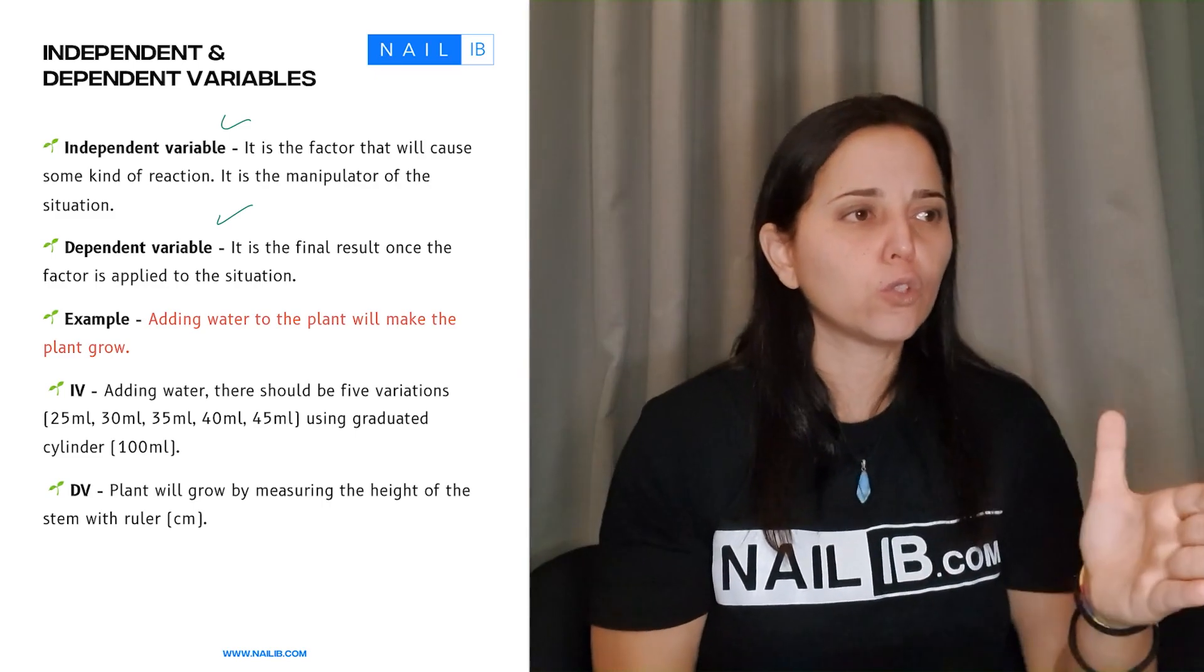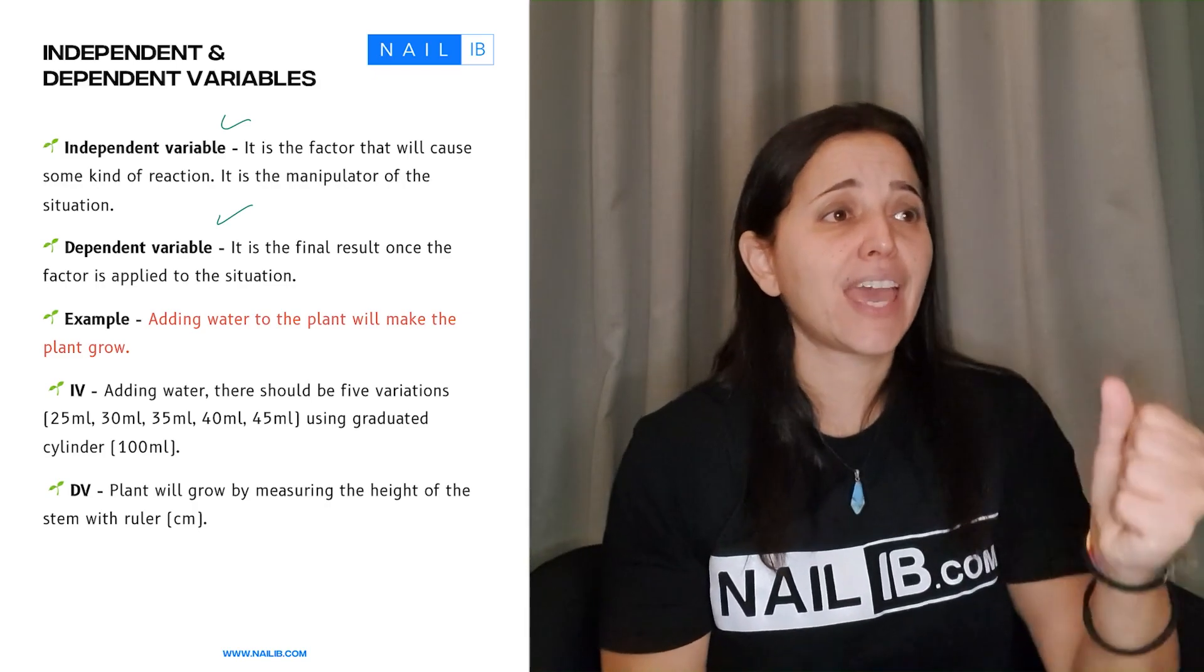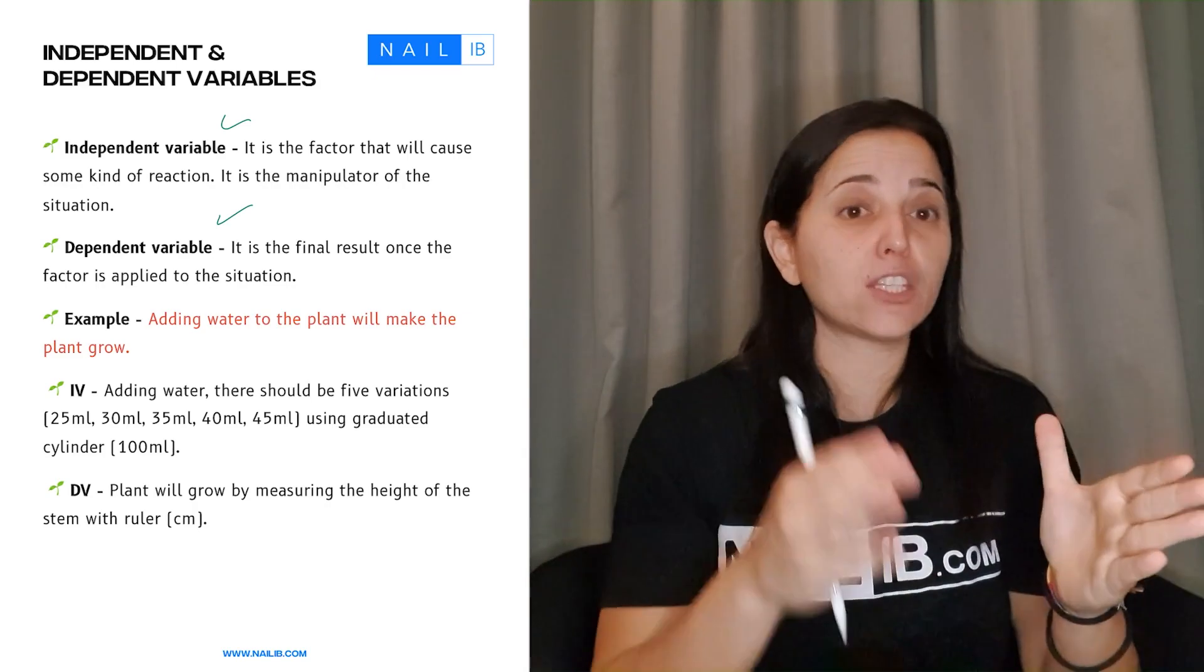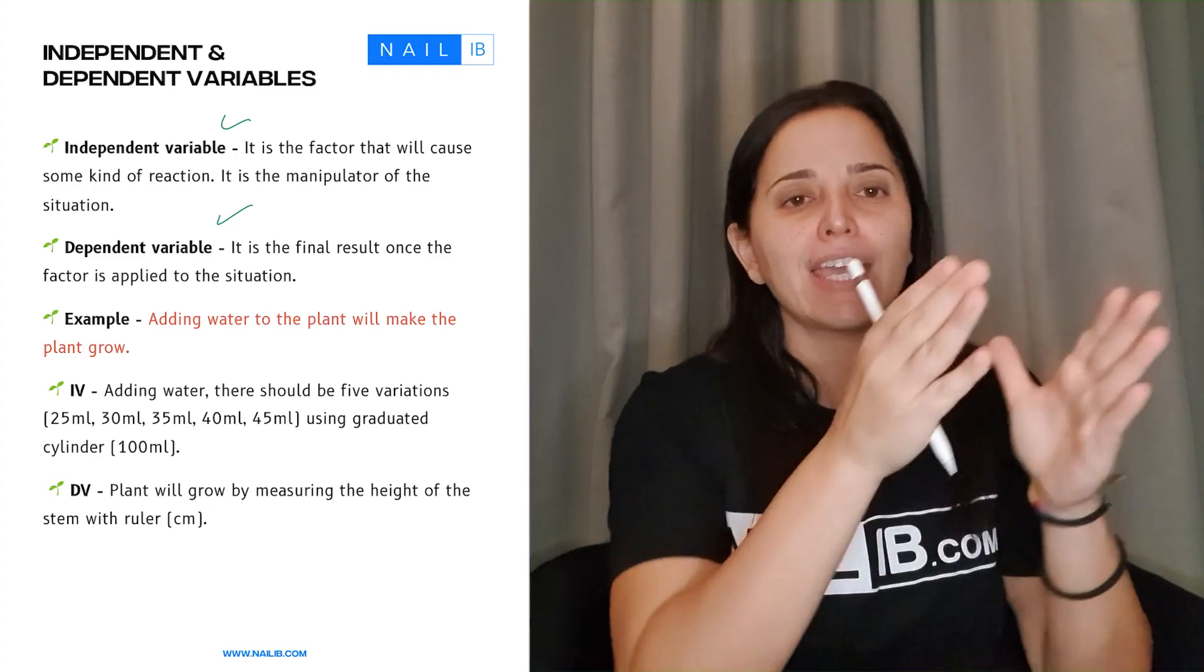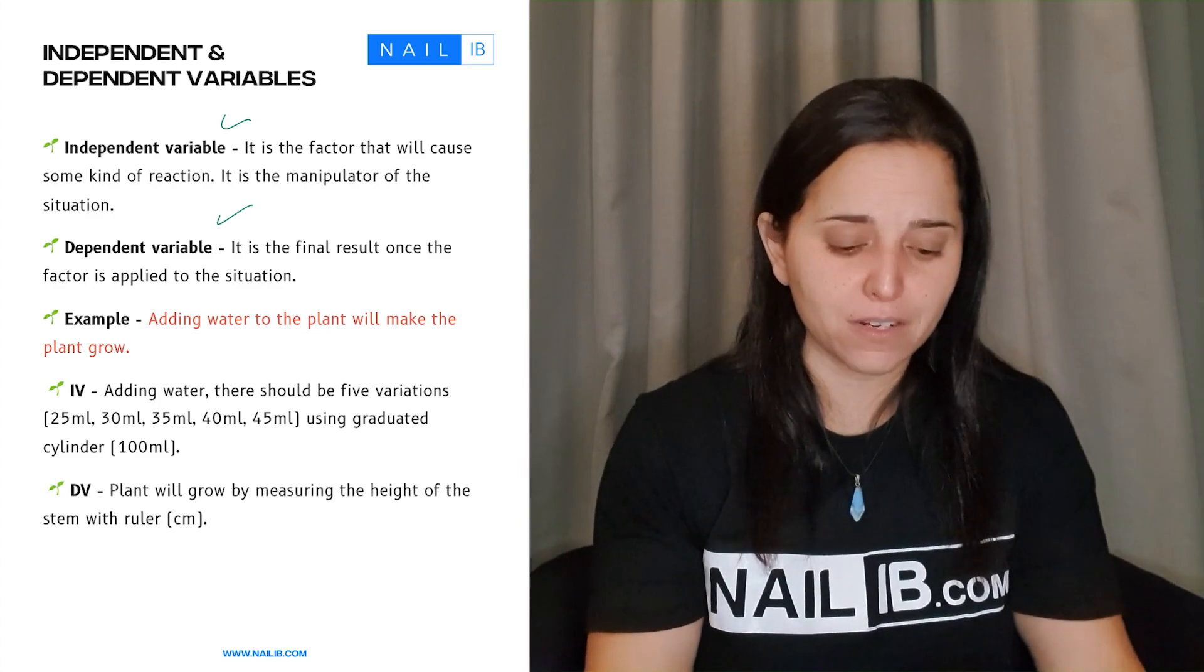So even for pHs 2, 4, 6, 8 or concentrations 10, 15, 20 or 10, 20, 30. Stay in a good range when it comes to these variations. Remember there has to be five variations of your independent.